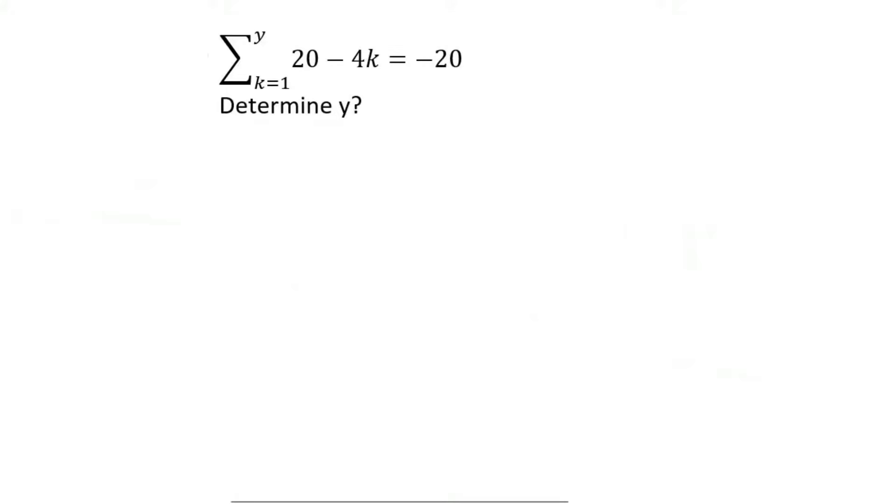It's usually a good idea to start sigma notation questions by finding term 1, term 2, and term 3. To find term 1, you plug in whatever this number is, which in this case is also a 1, that's just a coincidence. And so that's going to be 20 minus 4 times 1, which is 16.